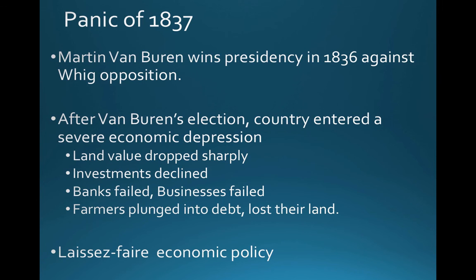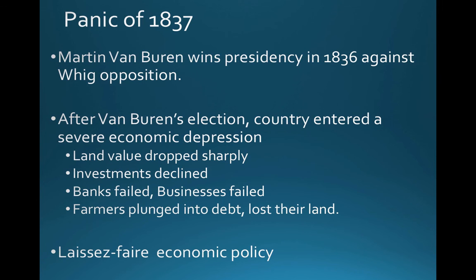As a result of Andrew Jackson's economic policies — though not the only reason — you get the Panic of 1837, which really hurt Martin Van Buren, who won the presidency in 1836 against the new party known as the Whigs. The country dove into an economic depression lasting into the mid-1840s. Land values dropped sharply, investments declined, many banks and businesses failed, and farmers plunged into debt and lost their land. A laissez-faire economic policy had set the stage for much of this collapse.